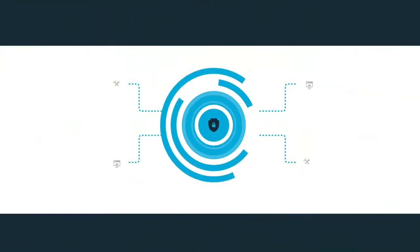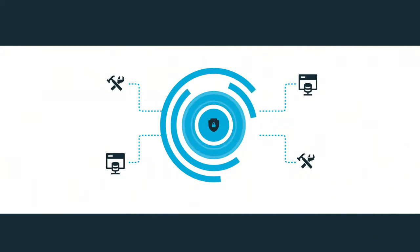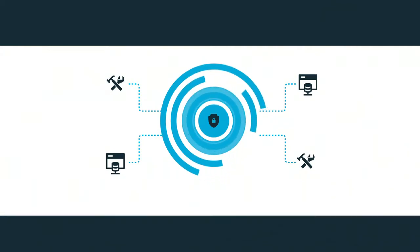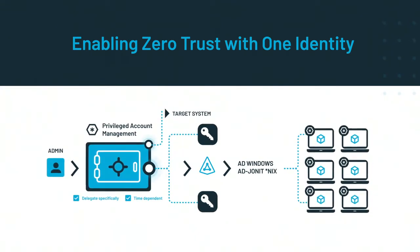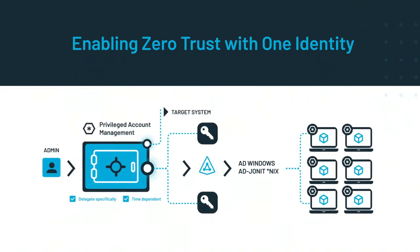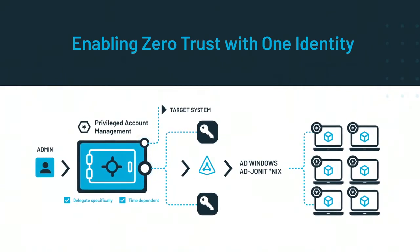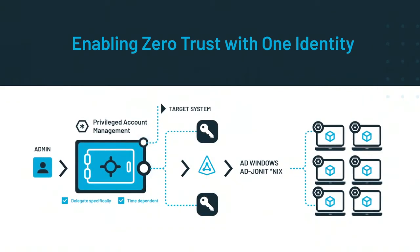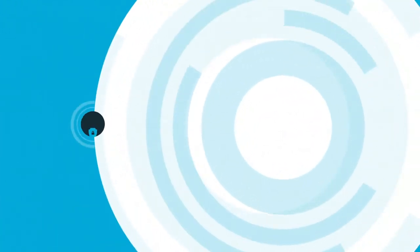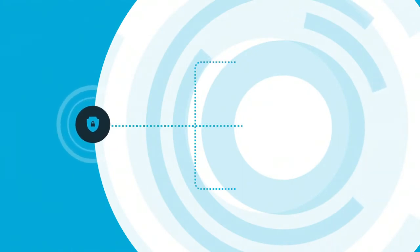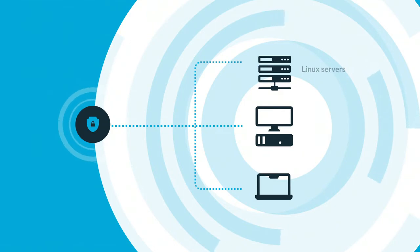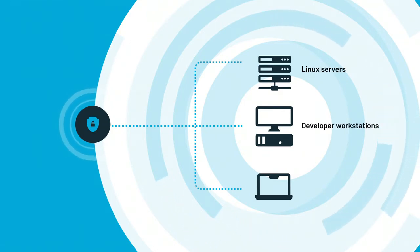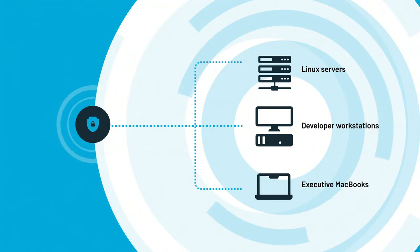While Zero Trust is a conceptual framework, making it happen does require specific tools. One Identity technologies help you in automating these workflows, and with features like Approval Anywhere, we make sure that the user experience is as smooth as possible. Another One Identity feature helps extend your Zero Trust posture to your hybrid environments — Linux servers, developer workstations, and executive MacBooks are all covered by proper tooling and technology.